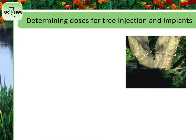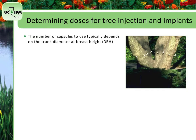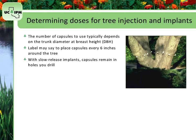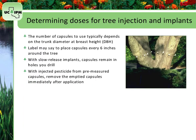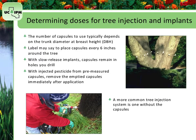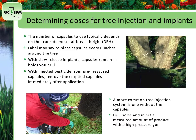When injecting or implanting capsules that contain a pre-measured amount of pesticide, the number of capsules to use typically depends on the trunk diameter at breast height. A label may say to place the pesticide capsules every 6 inches around the trunk. With slow-release implants, the capsules remain in holes drilled in the tree trunk — stay nearby so people don't touch them. Remove emptied capsules immediately after application. A more common system uses a high-pressure gun to inject a measured amount of product into drilled holes without capsules. A drawback of tree injections is potential injury to tree trunks caused by drilling.